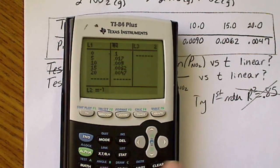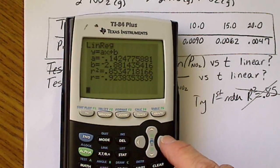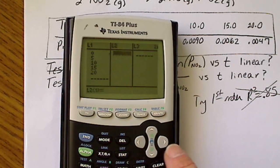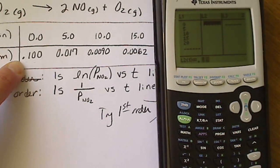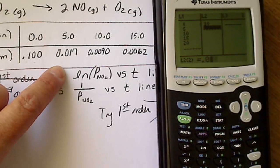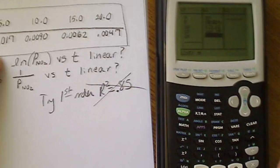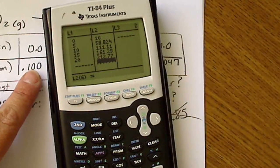The calculator didn't accept that approach, so I'll start fresh — go to Edit, clear all that out, and manually enter the reciprocal values one by one using the x⁻¹ key after each entry: 0.1, 0.017, 0.009, 0.0062, and 0.0047. So each of those data points I had to take the reciprocal of individually.